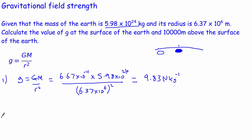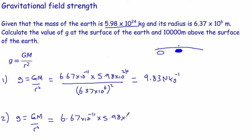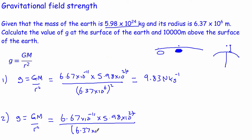The second example: we do exactly the same thing, using the same equation. We put in g = 6.67 × 10⁻¹¹ × 5.98 × 10²⁴. This time the only thing that's different is the distance. The distance will be the radius of the Earth plus the extra bit above the surface — so 6.37 × 10⁶ plus an extra 10,000 metres — and don't forget to square it. If you do that on your calculator, you get 9.80 newtons per kilogram.